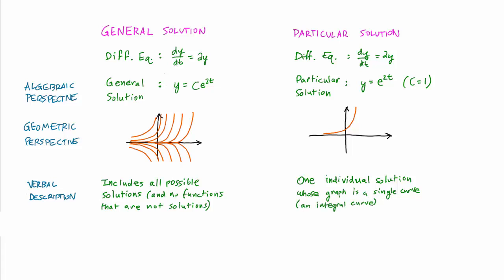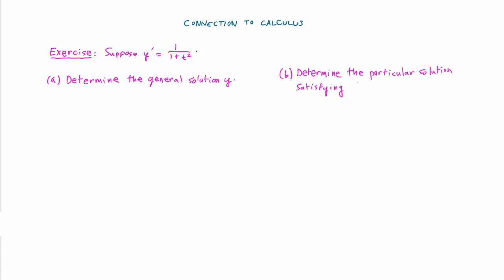Okay, to wrap up this video, let's finish with a quick exercise where we actually find the general solution for a certain differential equation and then use that to determine the particular solution that satisfies a given condition. Through this example, we'll also see a connection between what we're learning now and what you learned in calculus. Here's the exercise. Suppose that y prime is equal to 1 over the quantity 1 plus t squared.